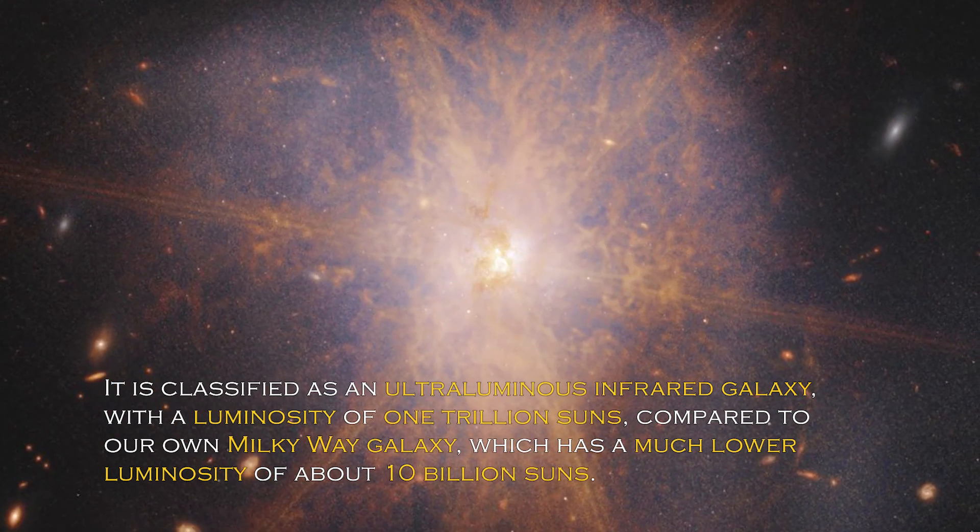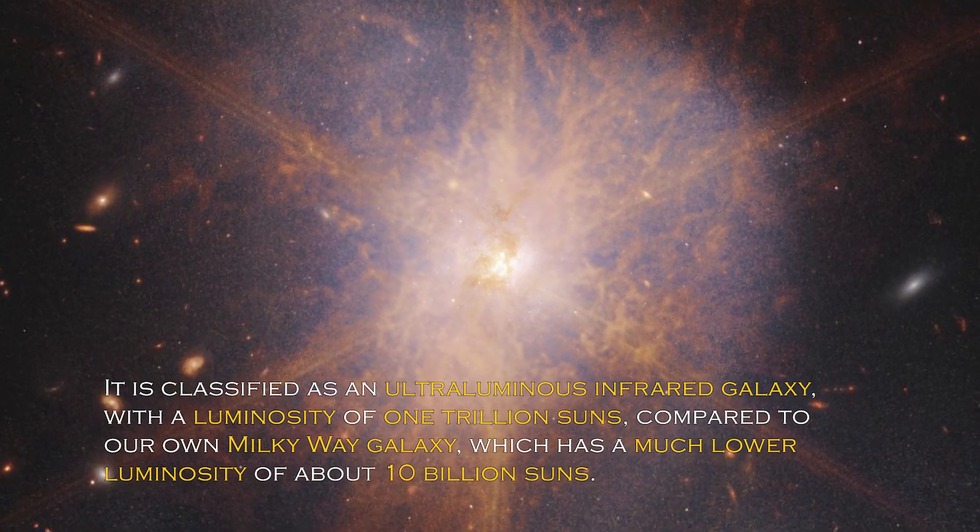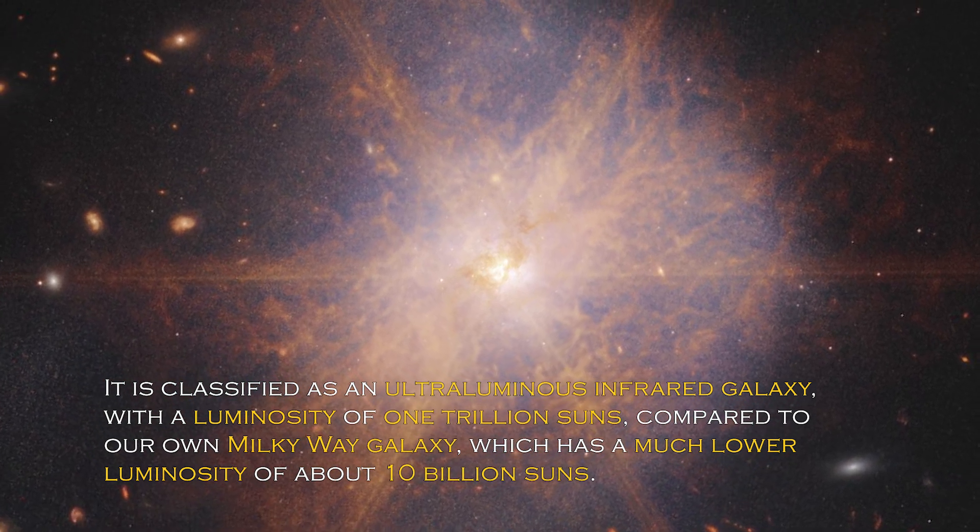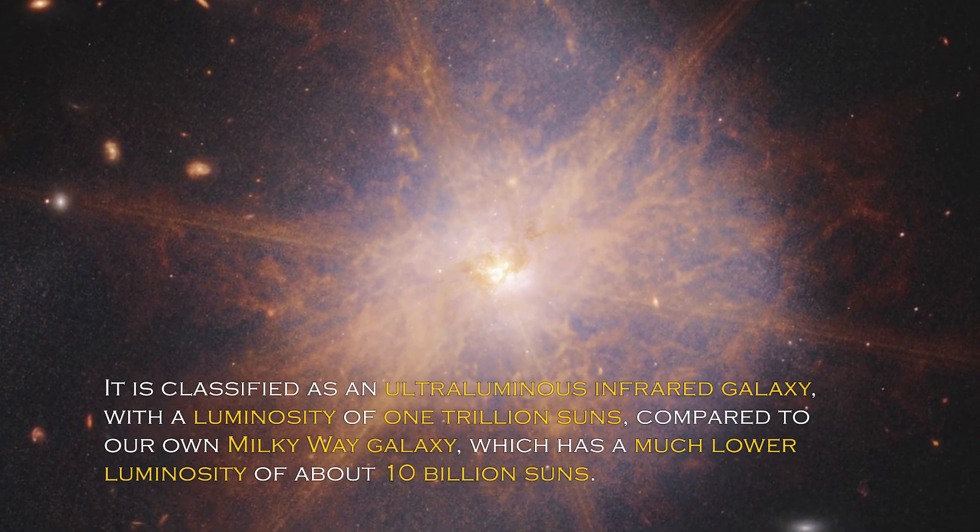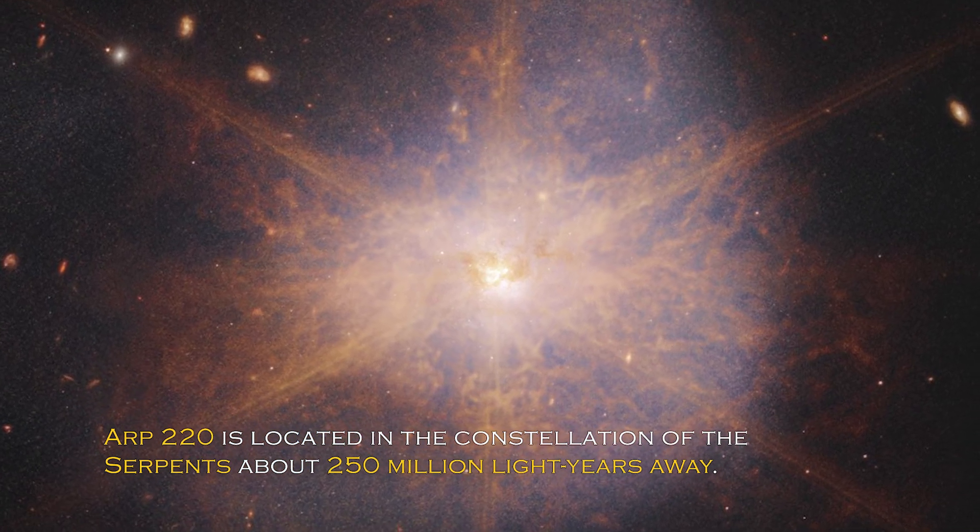It is classified as an ultra-luminous infrared galaxy with a luminosity of one trillion suns, compared to our own galaxy, the Milky Way, which has much lower luminosity of about 10 billion suns. ARP 220 is located in the constellation Serpens,